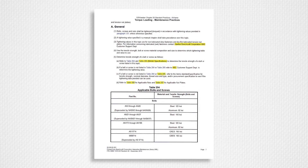First, you need to find the KSI rating of your bolt. For American Spec Bolts MS/NAS, they can be found in Chapter 20 Standard Practices 20-09-20 Table 204 with their KSI rating. After you have your KSI rating, you can then go directly to the torque charts.